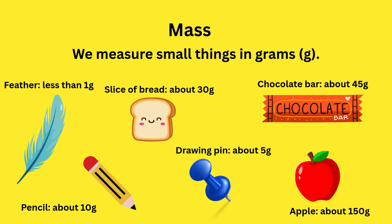We measure small things in grams. A feather is less than 1 gram. A chocolate bar is about 45 grams. And a drawing pin is about 5 grams.